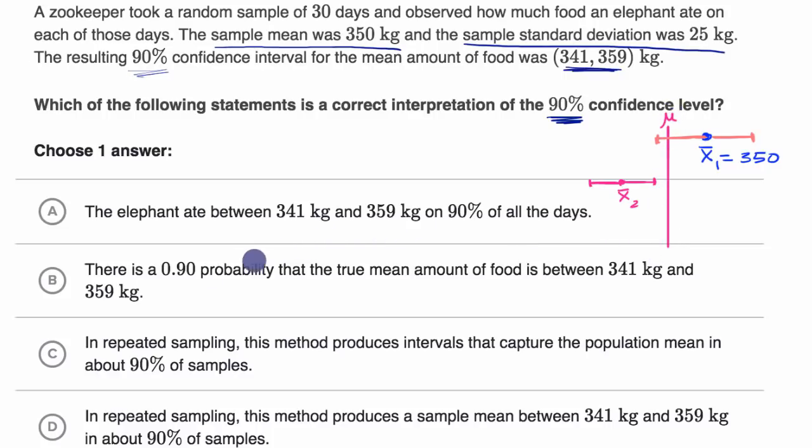So now, with that out of the way, let's see which of these choices are consistent with that interpretation. Choice A: The elephant ate between 341 kilograms and 359 kilograms on 90% of all of the days. No, that is definitely not what is going on here. We're not talking about what's happening on 90% of the days, so let's rule this choice out.